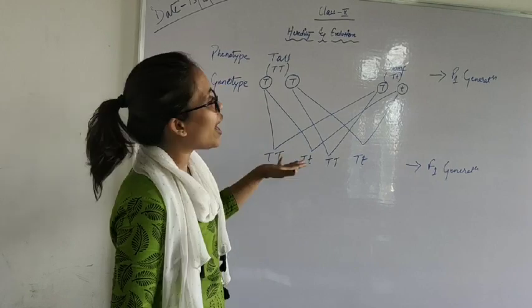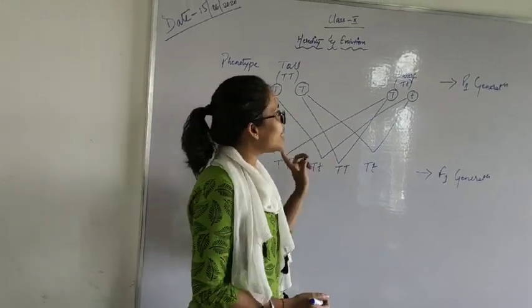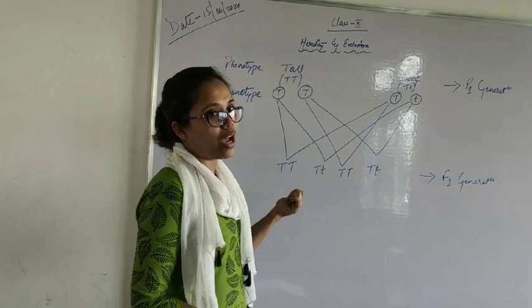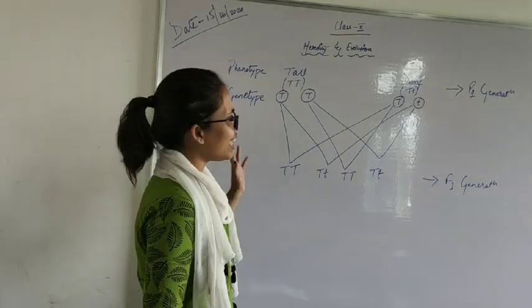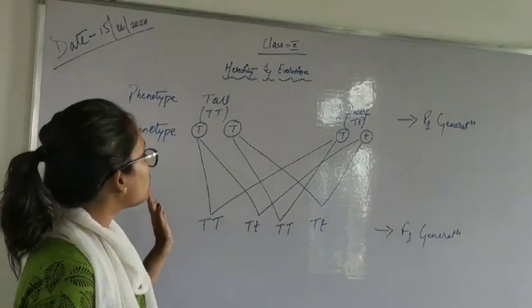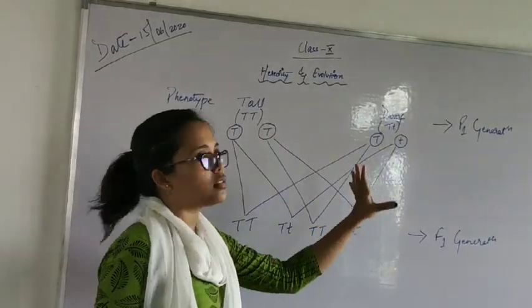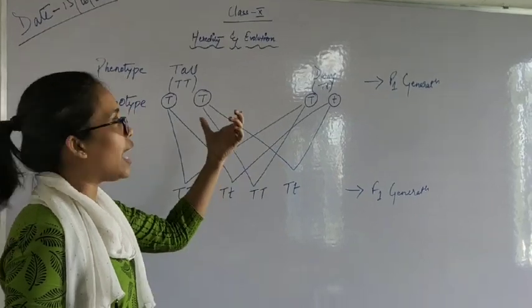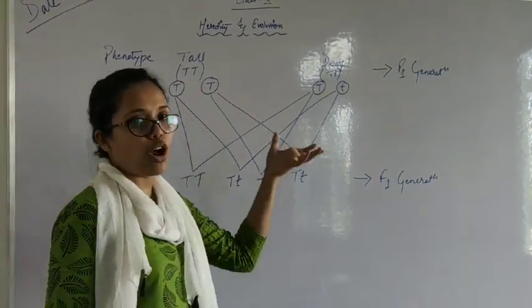So this is monohybrid cross. He did cross with the pea plants. Why monohybrid? Mono means one, and hybridizing you know. So monohybrid because a particular characteristic undergoes hybridization here. So it is monohybrid.